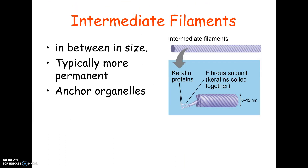The last one is called intermediate filaments, and they're literally intermediate in size. They're more permanent than the other two types and happen to be made of keratin, which is what's in your hair and nails as well. I would probably only ask you about microtubules and microfilaments on a test — intermediate filaments I probably wouldn't even mention.